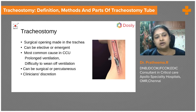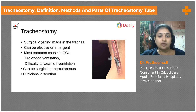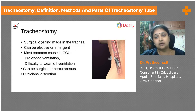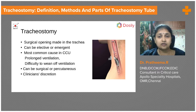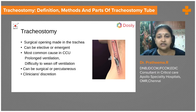Tracheostomies can be elective or emergent. The most common cause for which we put a patient on tracheostomy is prolonged ventilation. When a patient is going to be on the ventilator for quite some time, it will not be comfortable to continue on the endotracheal tube. Difficulty in weaning from ventilation is the next common cause in the CCU for putting a patient on tracheostomy.